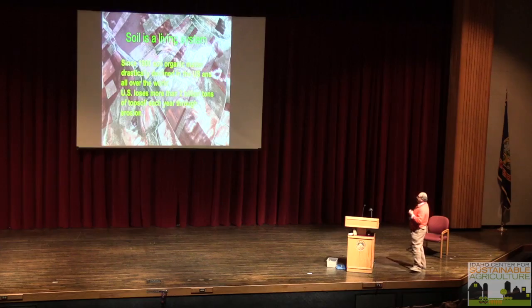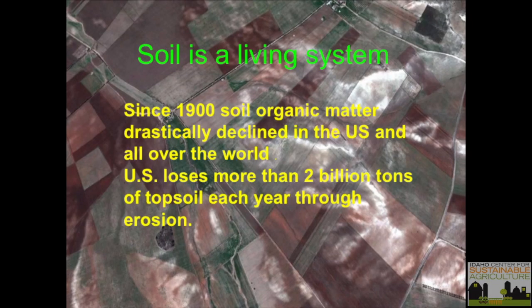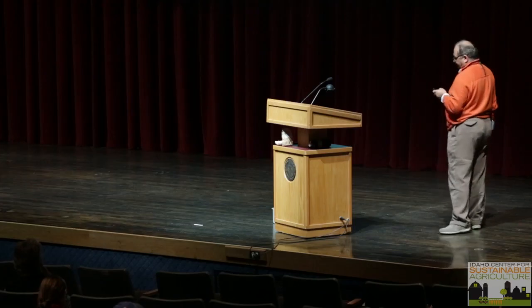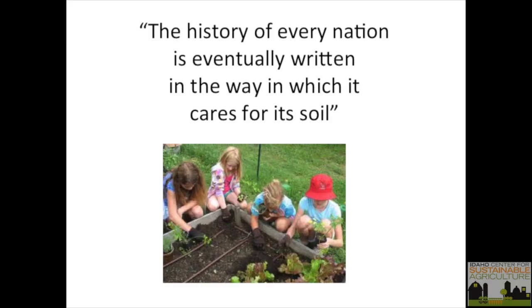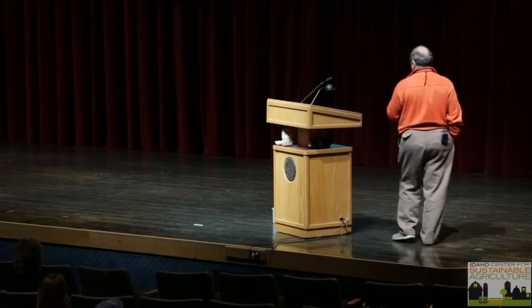Soil is a living system — I call it a pulse of intelligence. It gives us land to live on, soil to plant, grow crops, feed our children. The US loses more than 2 billion tons of topsoil each year through erosion. President Roosevelt said, 'The history of every nation is eventually written in the way in which it cares for its soil.' Now let me start explaining this missing link.